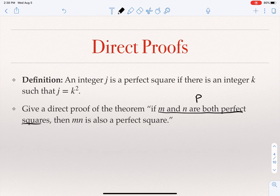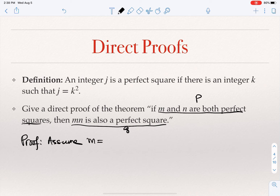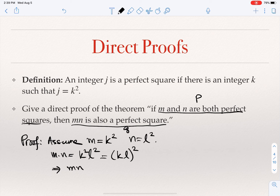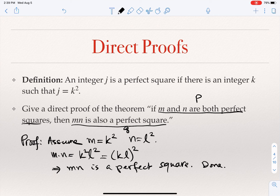The claim is: if m and n are both perfect squares, then mn is also a perfect square. Here p is 'm and n are perfect squares' and q is 'mn is also a perfect square.' The proof: assume m = k² and n = l² for integers k and l. Then m × n = k² × l² = (kl)². Since kl is an integer, mn is an integer squared, therefore mn is a perfect square.